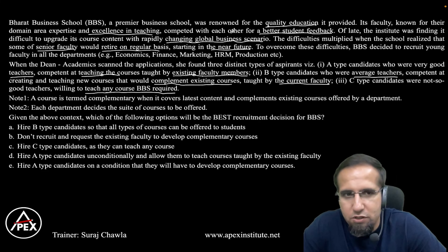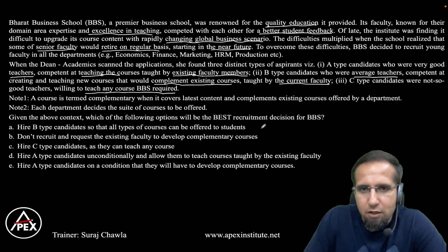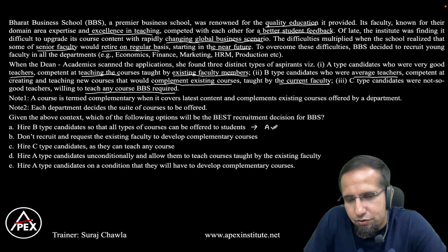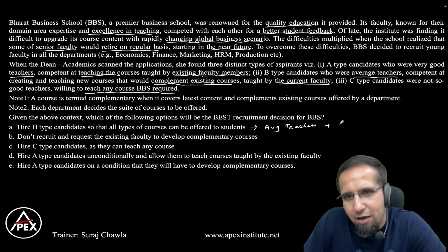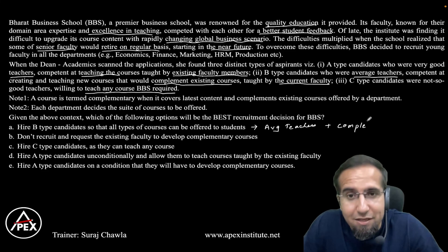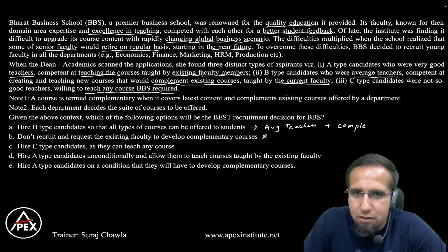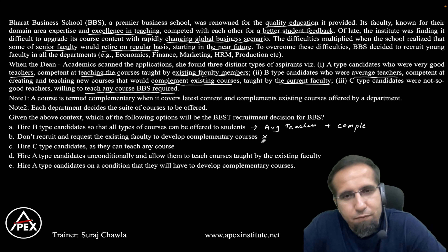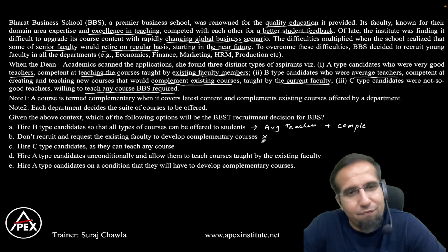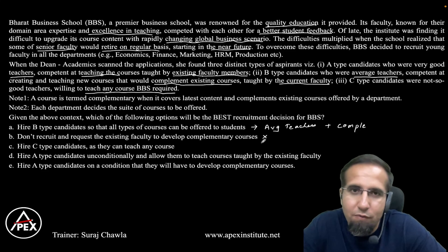Let's go through the options. Option A: hire Type B candidates so that all types of courses can be offered. On face value it sounds good, but Type B are average teachers, which is a minor drawback, though they are competent in creating complementary courses. Option A seems close but let's not jump to conclusions. Option B: don't recruit and request existing faculty to develop complementary courses. This is definitely not my option — existing faculty are already struggling and faculties are retiring, so not recruiting would add extra load.